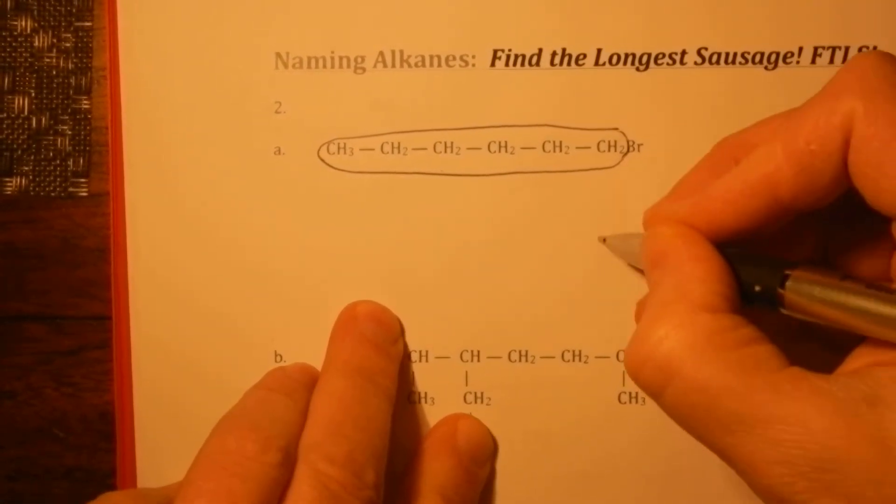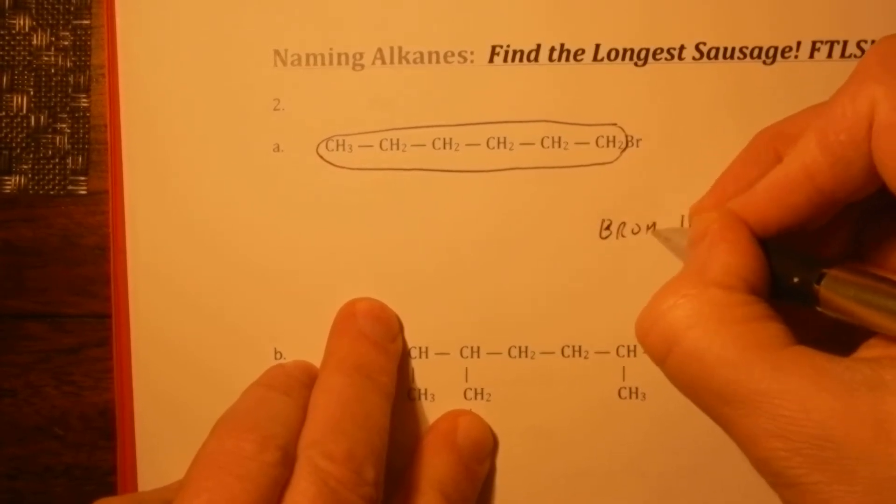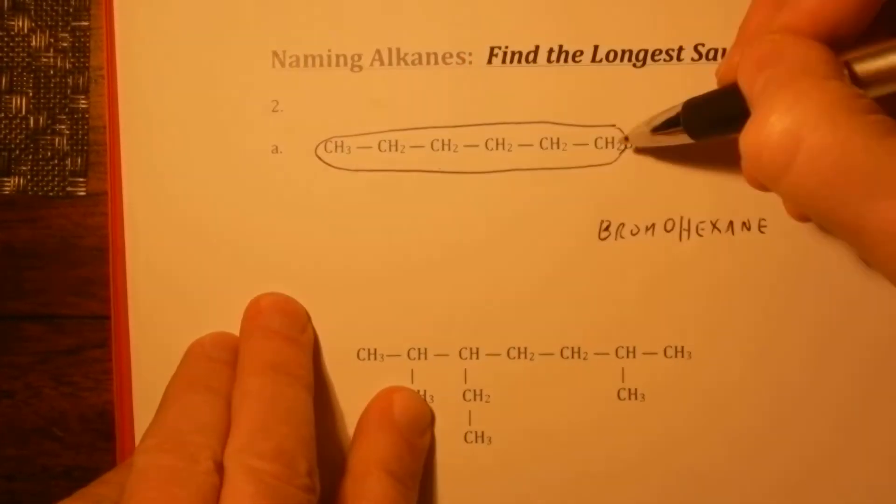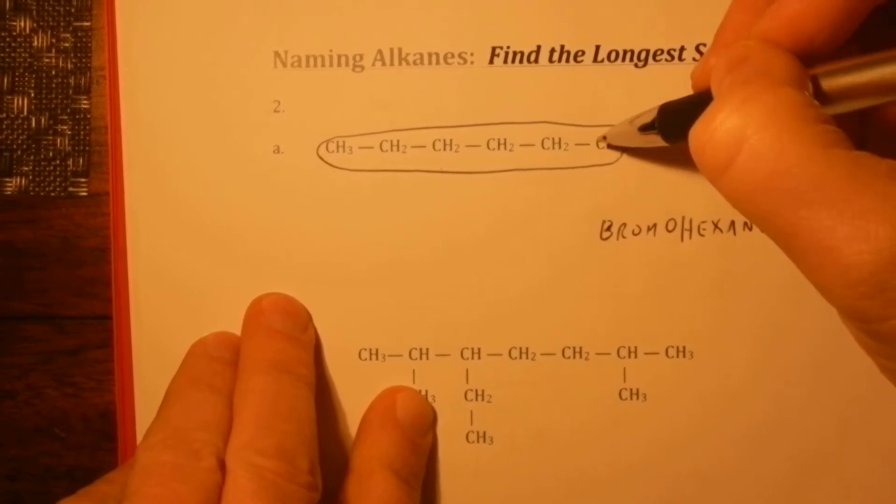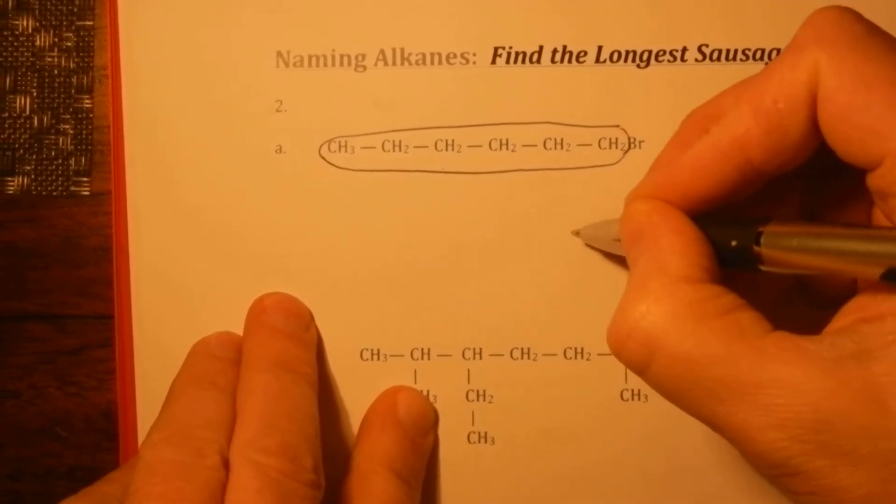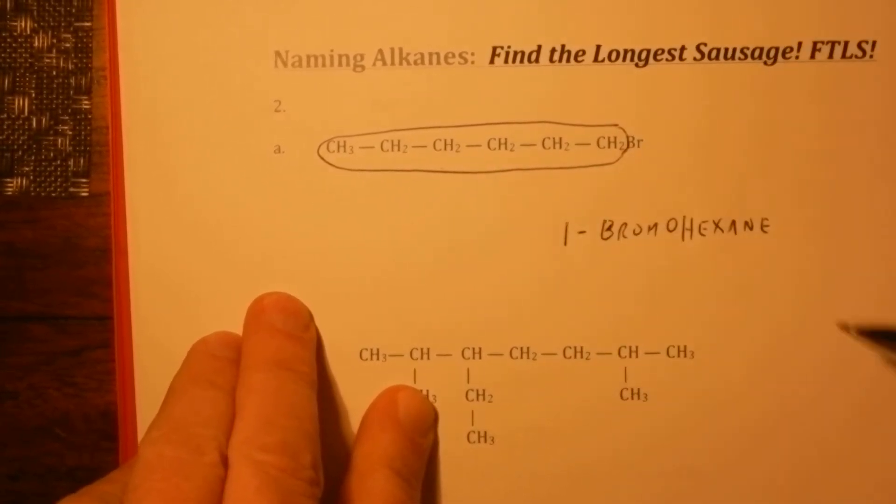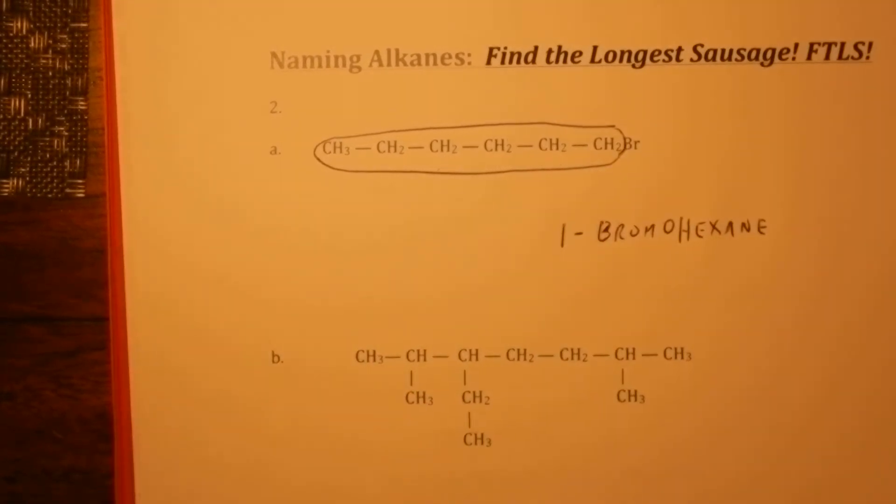There's a bromine here, and that becomes bromo. Now, I could make it 6-bromo, but it's better to count from this end. It gives a lower address. So this is 1-bromo. It's saying the bromine is off an end carbon.